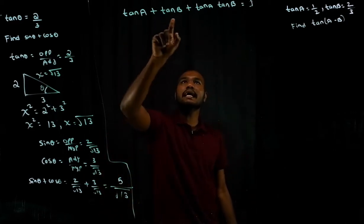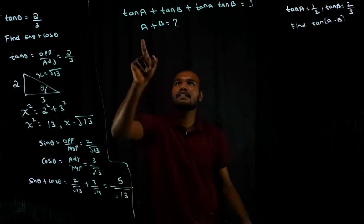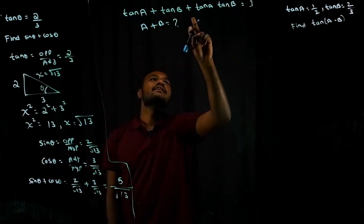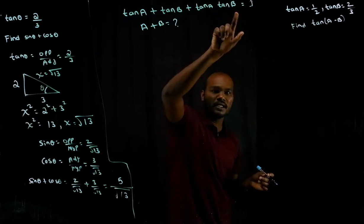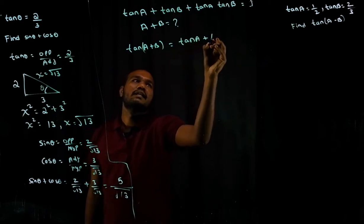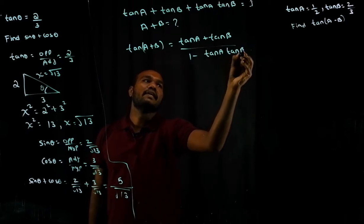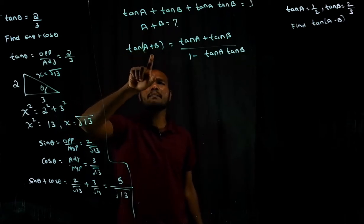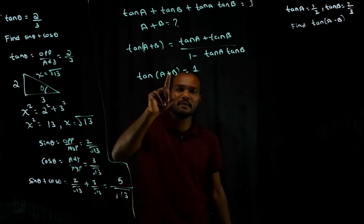The next question: tan A plus tan B plus tan A tan B is equal to 1. They ask you to find the value of A plus B, where A and B are some angles. Does tan A plus tan B plus tan A tan B sound familiar? We know the formula: tan of (A plus B) is equal to tan A plus tan B over 1 minus tan A tan B. That sounds something like this, but in the entire question we cannot find a direct A plus B value.